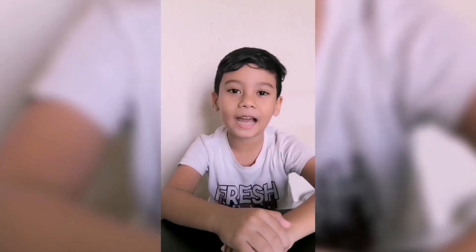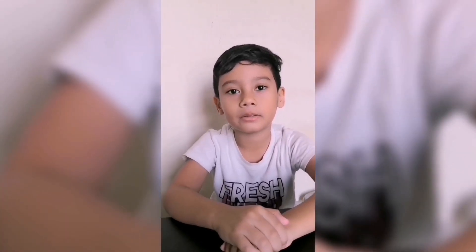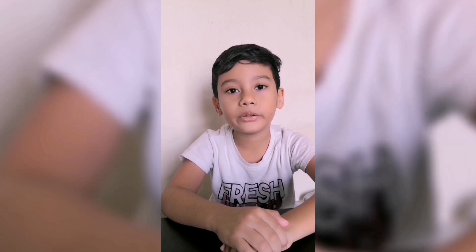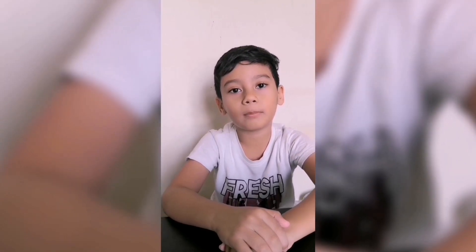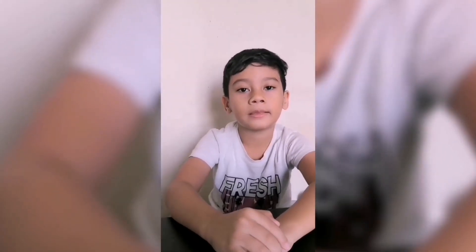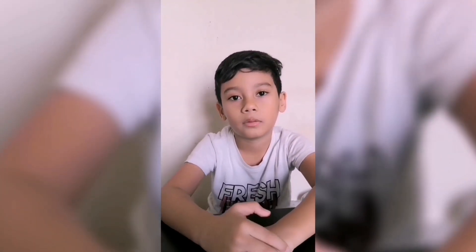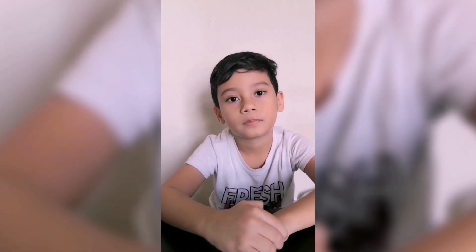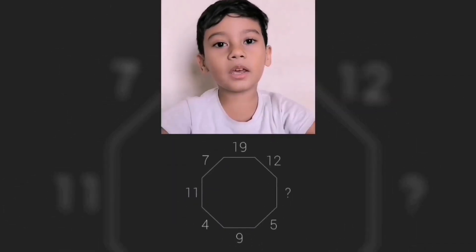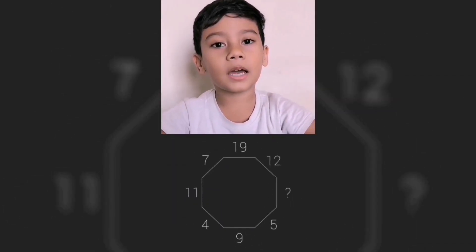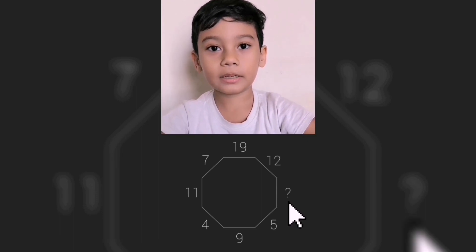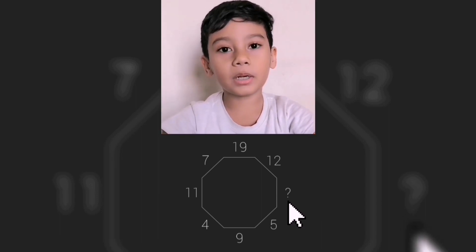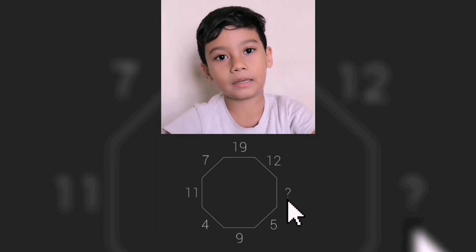Hey guys, how are you doing today? Are you ready to warm up your mind? Here is your math brain test to solve. In this octagon, every side has a given number. What number is missing?